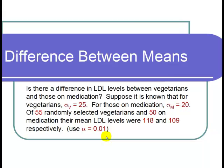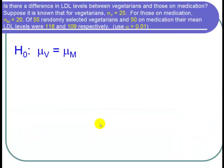So let's write down our null and alternative hypotheses first. For the null hypothesis, we want to find out if there's a difference between the mean LDL levels. So if I let mu sub v be the mean for the vegetarians and mu sub m be the mean for those on medication, then H naught is mu sub v equals mu sub m.